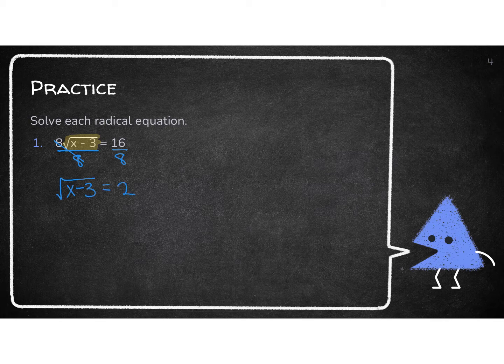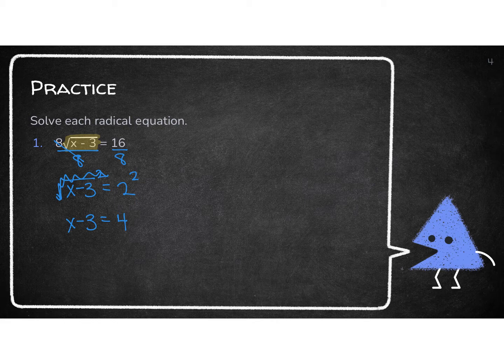Since the radical is alone — everything that was highlighted is alone — I can go ahead and square both sides. That's going to undo the square root. So I'm left with exactly what was underneath. 2 squared is 4. This is all the new part: you're going to get rid of anything that's not x. To undo subtracting 3, we add 3 to both sides. So x is going to equal 7.